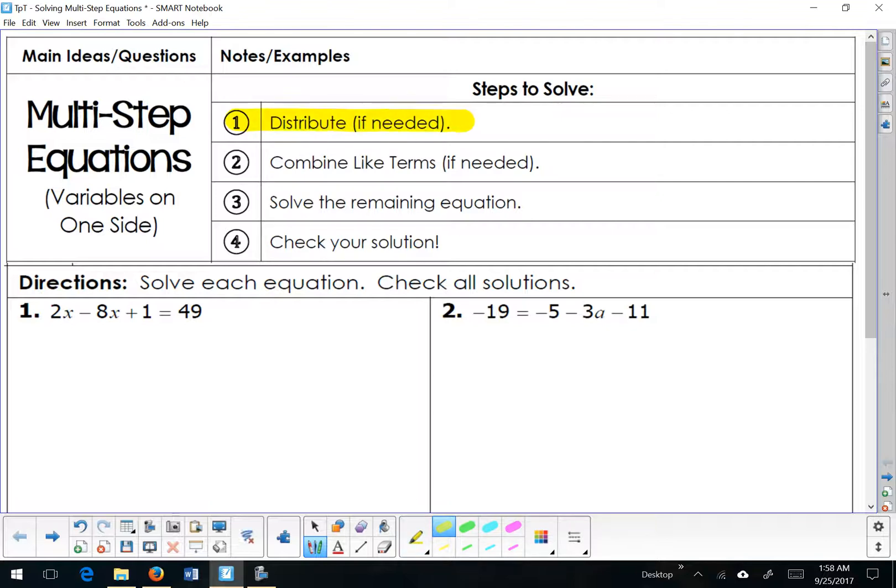First, look for parentheses. If your problem has parentheses in it, you need to distribute to clear those parentheses out by multiplying by whatever number is sitting outside of it. Step number two is to combine like terms if needed. Like terms are terms that are located on the same side of an equal sign. Step number three is to solve the remaining equation using the inverse operations you've been using all along, and then step four is to check your solution.